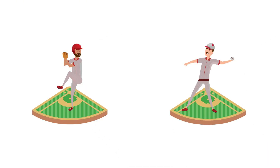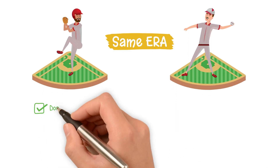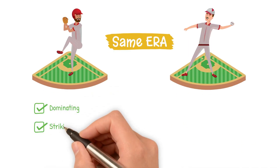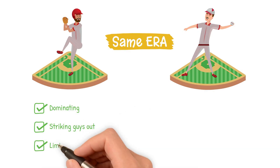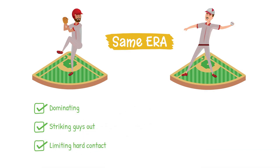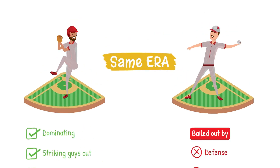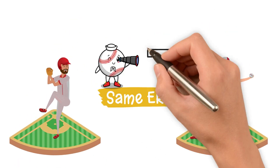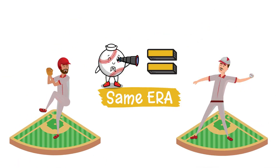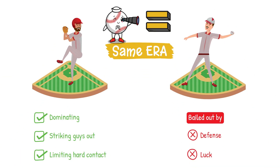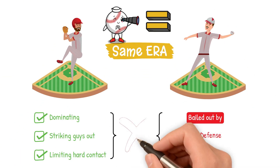Two pitchers, the same ERA. One is dominating, striking guys out, limiting hard contact. The other is getting bailed out by defense and luck. So how can these numbers look identical when the performances are clearly not?